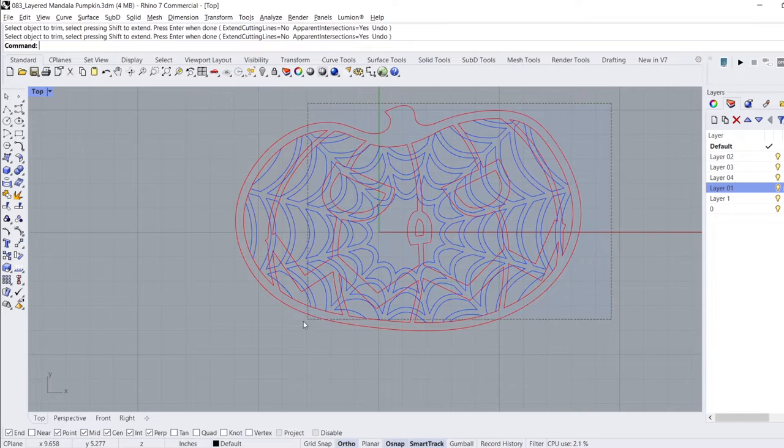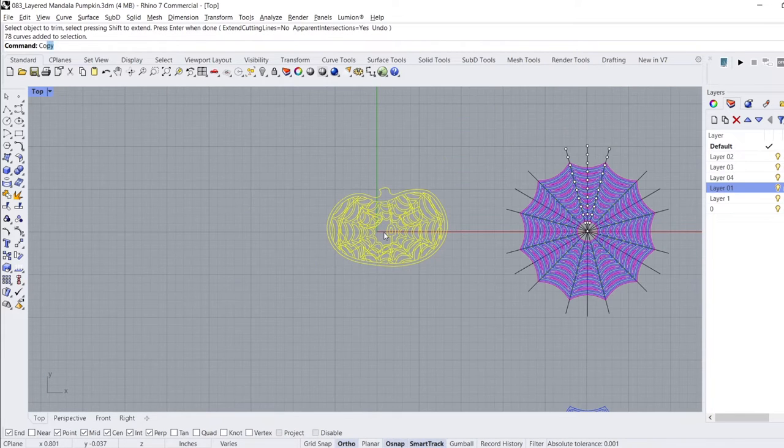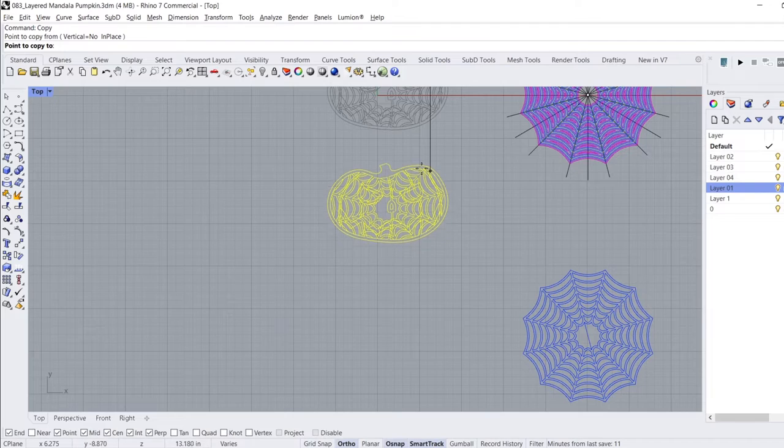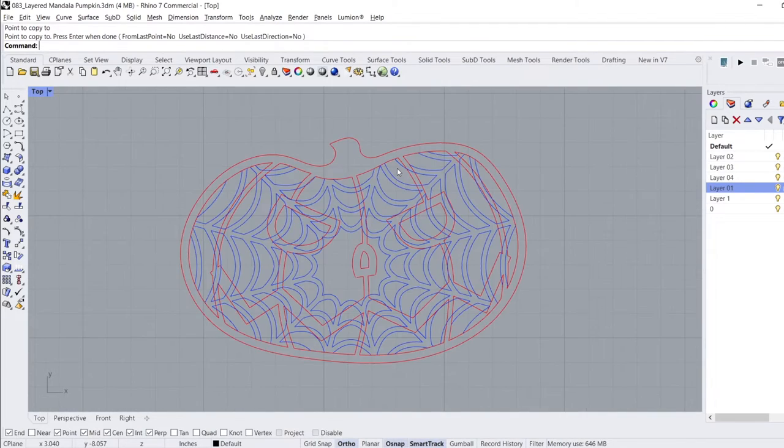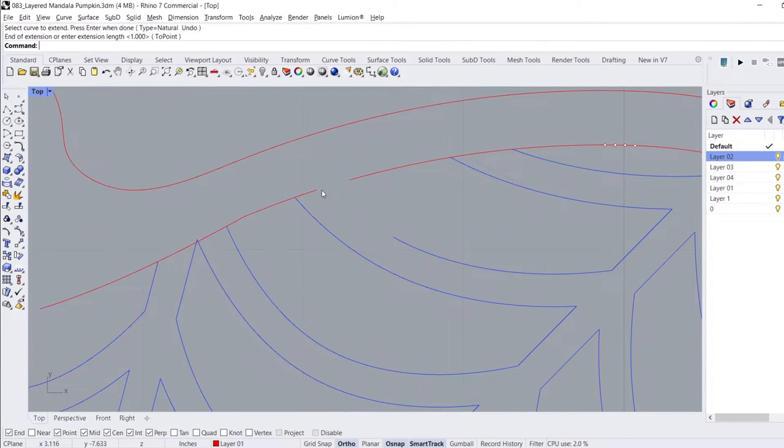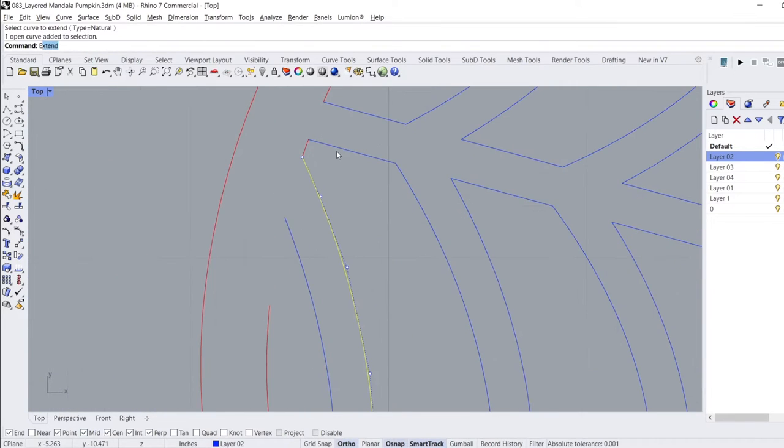When I was satisfied with its location, I selected all of the lines, copied it down to a new location, and used the trim command to clean up all the lines outside of the perimeter of the pumpkin and within the frame. I also trimmed the lines to connect the ends of the mandala to the frame so that it could be cut in one piece.